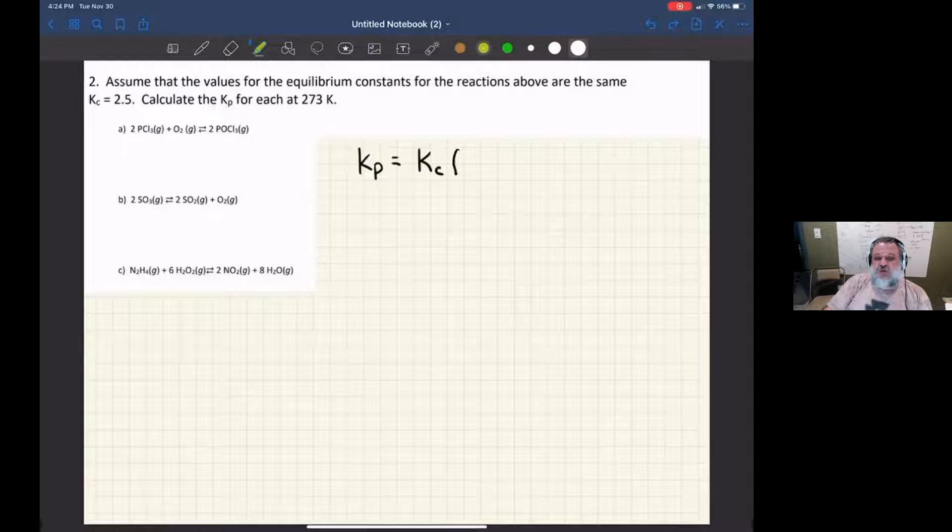And that's that the equilibrium constant in terms of partial pressures equals the equilibrium constant in terms of molar concentrations times the quantity RT to the power delta N.